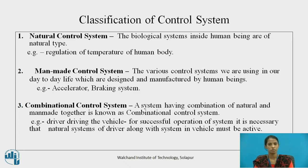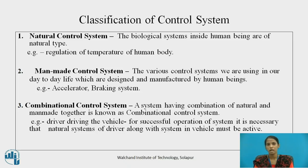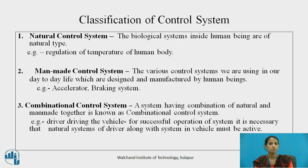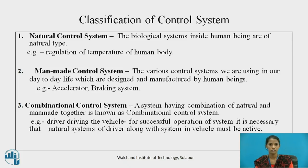First, natural control system: the biological systems inside the human body are of natural type. The human body is one of the best examples of a natural control system, such as the regulation of body temperature. Second, man-made control system: the various control systems we use in day-to-day life that are designed and manufactured by human beings, such as the accelerator and braking system.